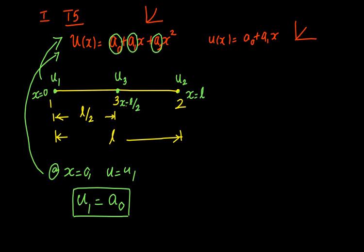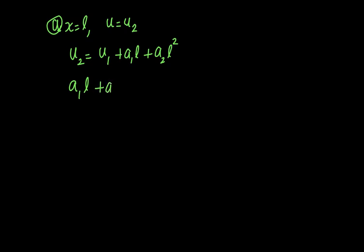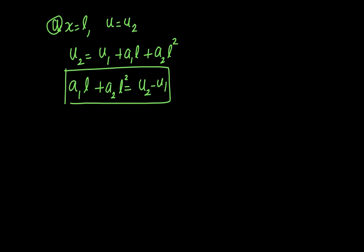The second boundary condition is: at x = L, u = u₂. Applying this to the trial solution gives u₂ = u₁ + a₁L + a₂L². Rearranging, we get: a₁L + a₂L² = u₂ − u₁. We call this Equation 1.